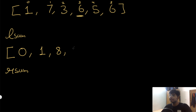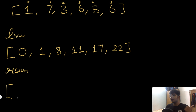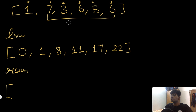Continuing: at the fourth index that's six plus eleven equals seventeen, and at the fifth index it's seventeen plus five which is twenty-two. So the full left sum array is [0, 1, 8, 11, 17, 22]. Now for the right sum, one approach is to go to index zero and sum all elements to its right: seven plus three plus six plus five plus six is twenty-seven. The total sum of the entire array is twenty-eight.